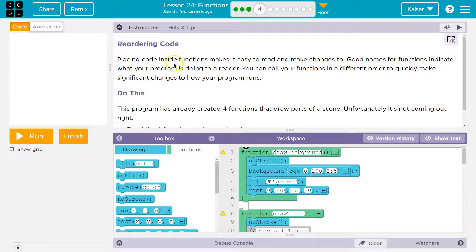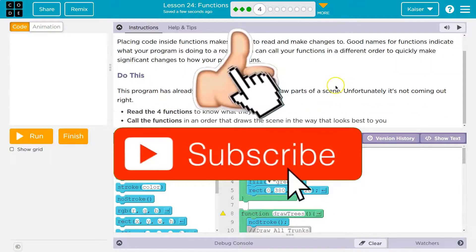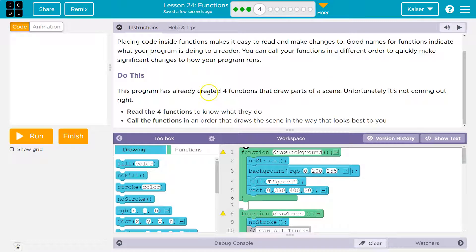Reordering code. Placing code inside a function makes it easier to read and make changes. Good names for functions indicate what your program is doing to a reader. You can call your function in a different order to quickly make significant changes to how a program runs. This program has already created four functions that draw parts of a scene. Unfortunately, it's not coming out right.